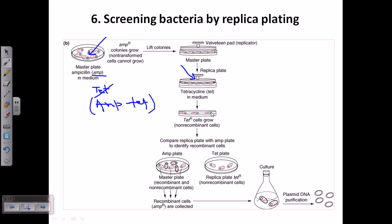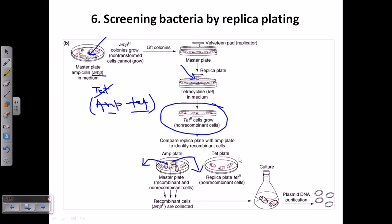If we observe any growth on the new tetracycline-containing medium, we can infer that those bacteria carry the tetracycline resistant gene. Bacteria having both ampicillin and tetracycline resistant genes can grow on both this medium and the master plate. By comparing the two plates, we can identify which bacterial cultures are tetracycline resistant and which are ampicillin resistant, then extract that DNA for further analysis.